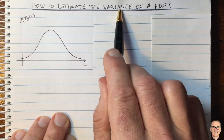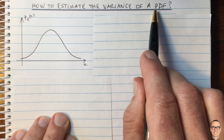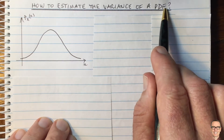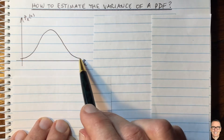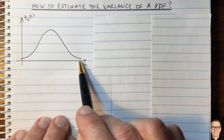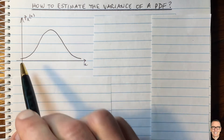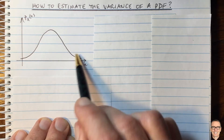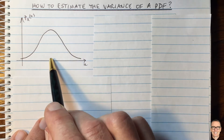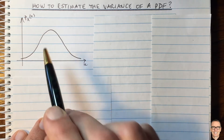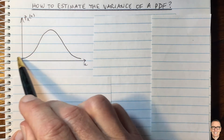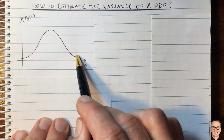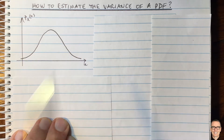How do you estimate the variance of a random variable's probability density function? I've shown one example of a PDF here. If we were to estimate the shape, we would need to estimate the mean and then estimate the width of this — the variance, the second moment.